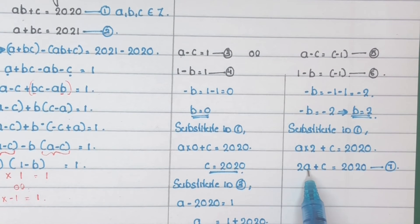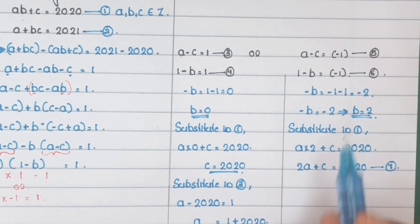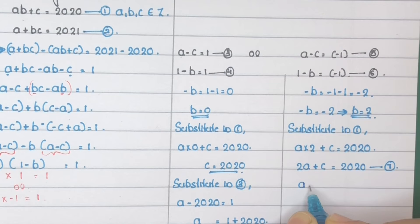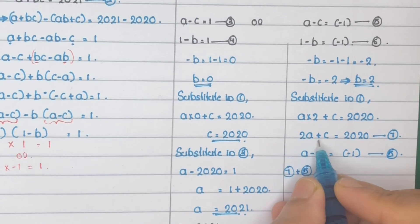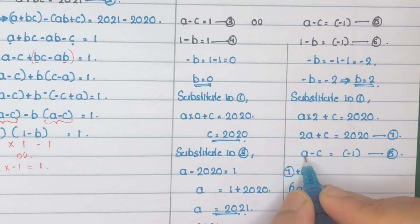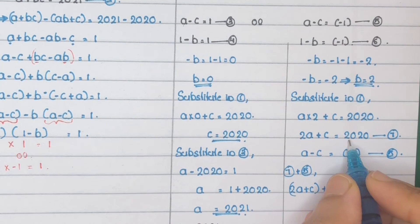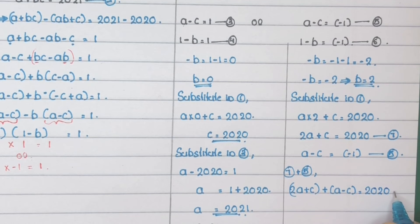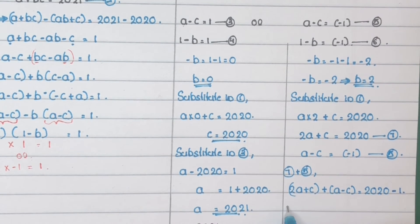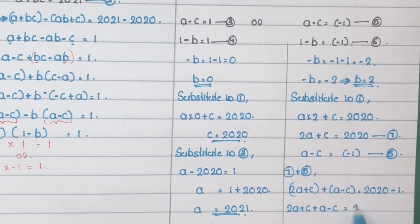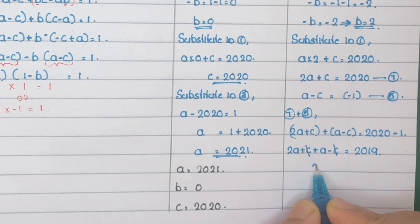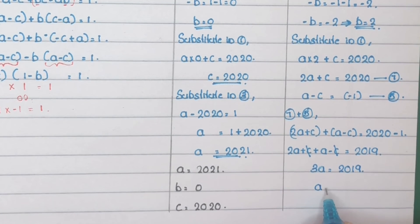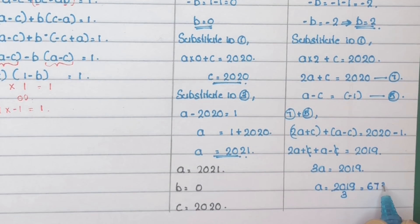Equation 7 has variables A and C. Equation 5 also has A and C: A minus C equals minus 1. Add equations 7 and 5: (2A plus C) plus (A minus C) equals 2020 plus (minus 1). The C terms cancel: 3A equals 2019, so A equals 2019 divided by 3, which gives A equals 673.